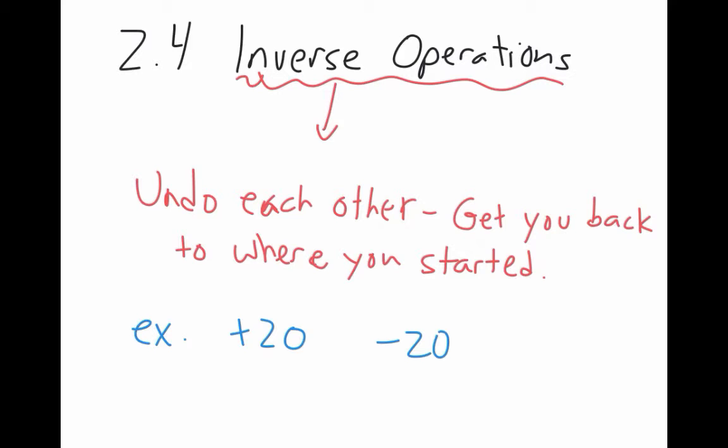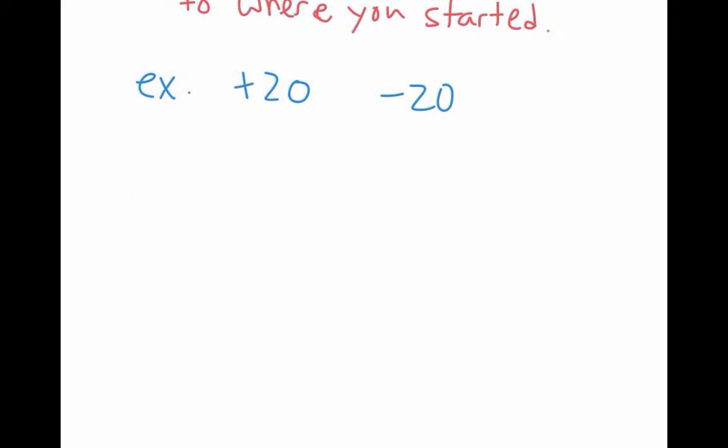If you have one person, say, you're walking four steps forward, the inverse of walking four steps forward would be to walk four steps backwards, gets you right back to where you were when you started. So examples, you could put down things like adding 20, subtracting 20, maybe four steps forward. So four steps forward. And four steps backwards. That if you do that, you should end up in the exact same spot.